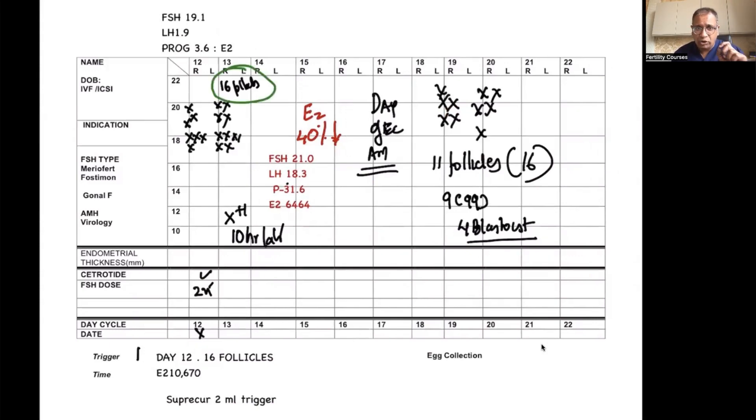16 follicles were present. E2 was 10,670 PMOL, so that's reasonably high. Follicles were all in the range of 17 millimeter. FSH rise indicated a good serum FSH on the day of trigger. LH rise indicating that there was no premature LH surge, a progesterone of 3.6, and so it all seems in place for a proper trigger.